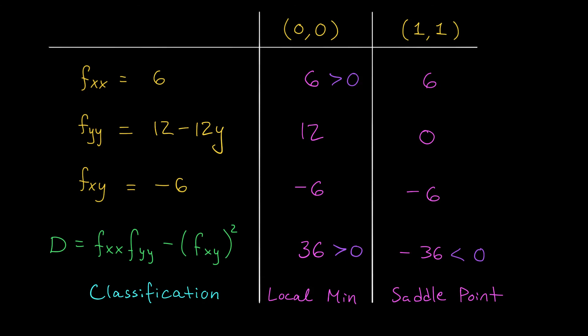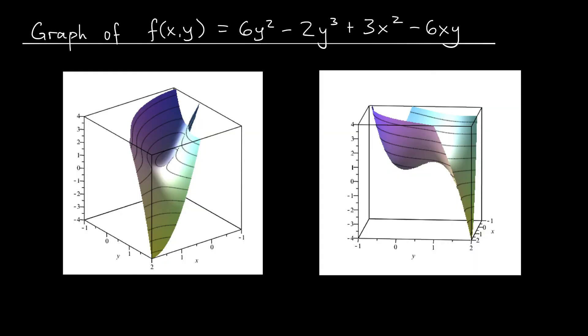Let's end this video with a quick look at the graph so you can see that this checks out. Here's the graph of our function f(x,y) viewed from two different angles. Let's start by looking at the point (0,0). In the first picture, you can see that at (0,0), we're going to be sitting right at the bottom of this bowl. We have a local minimum.